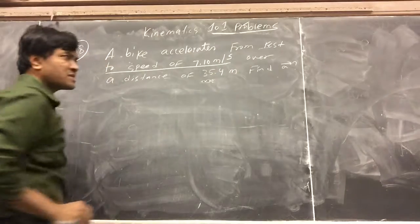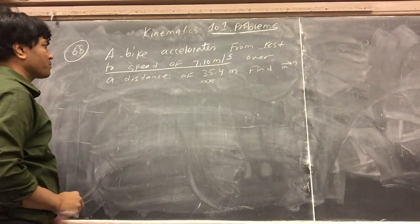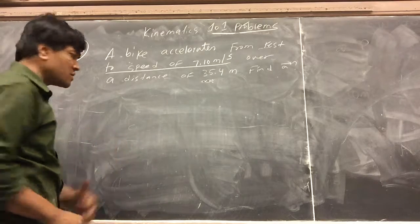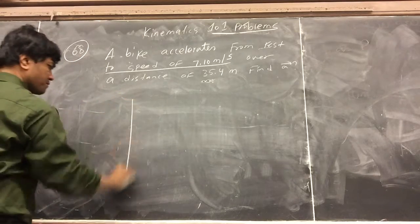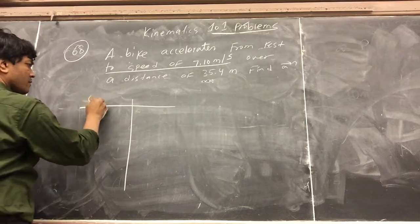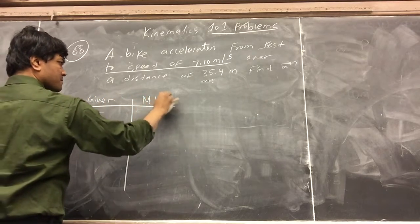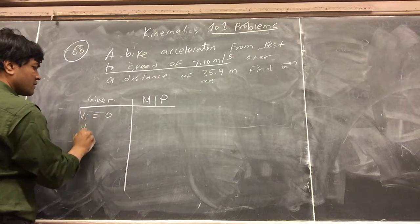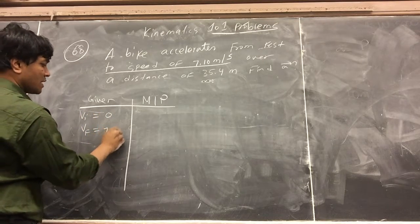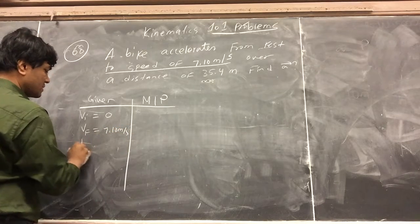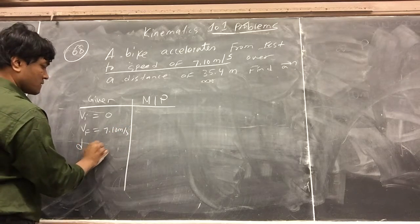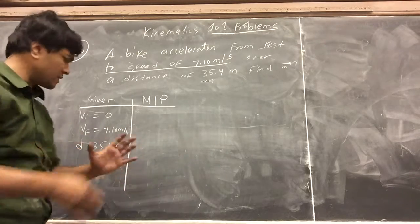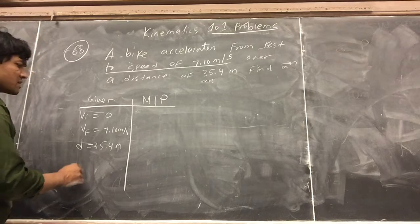The final velocity is 7.10 meters per second over a distance of 35.4 meters. Find the acceleration. So we're going to make a table. Given: initial velocity is 0, velocity final is 7.10 meters per second, and the distance that it has been accelerating is 35.4 meters. What do you want to find? Acceleration.